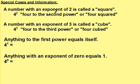A number with an exponent of 2 is called a square. So it's perfectly fine to say 4 to the second power, but lots of people will say 4 squared. A number with an exponent of 3 is called a cube. So you can read this 4 to the third power, or you can say 4 cubed.